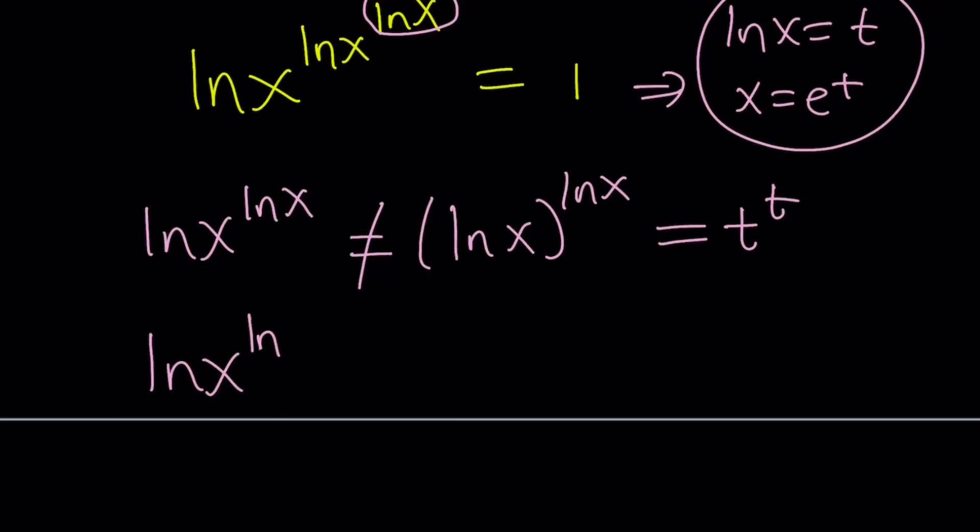So ln x to the power ln x becomes, since this is x, that's our base, we have to write this as ln of x, which is e to the t, and then that to the power ln x, which is t. So this becomes ln of e to the power t squared, which is actually t squared, because you can go ahead and move this to the front. Awesome.